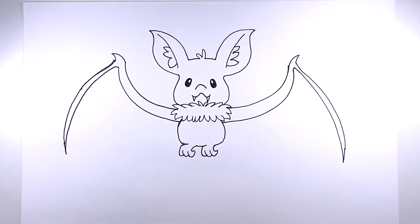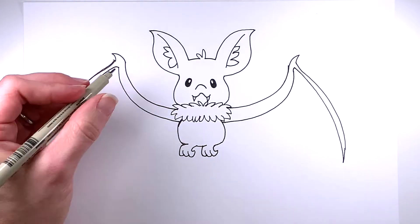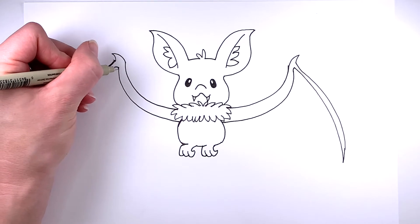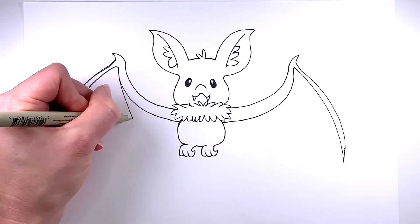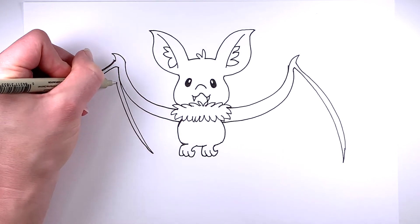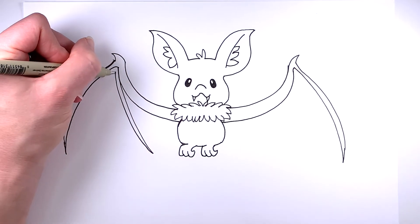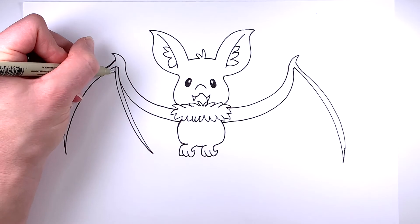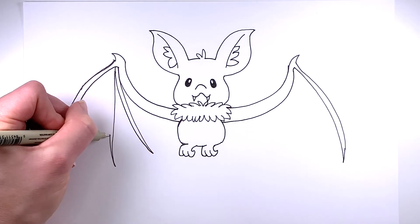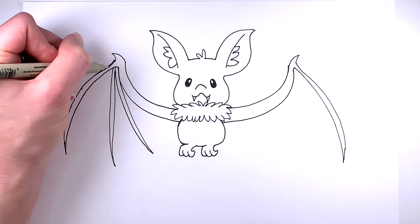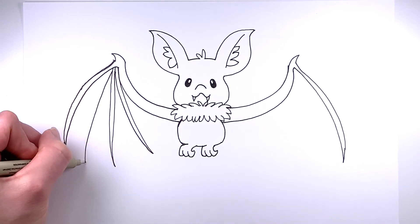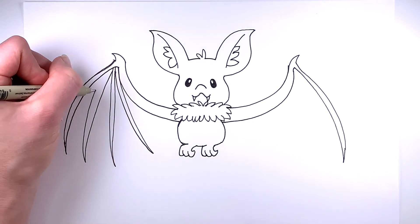And now to finish up the bat's wings, just going to be drawing some extra lines here. So the fun thing about bats, I think it's like a cool fact about them. Their wings are actually like hands. So these are all pretty much like fingers on a hand. And they all have bones, just like a human hand.